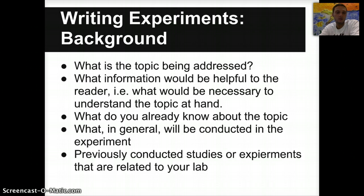You'd also want to include what we already know about the topic. And this is a great location that you can use outside sources as long as they're cited. Include outside sources of where you got that information. Kind of a quick general explanation of what will be conducted in the experiment and why. And then any previously conducted studies or experiments that are related to your lab. Some also outside information. Things that we already kind of know about the topic that would be pertinent or important to include in your explanation.